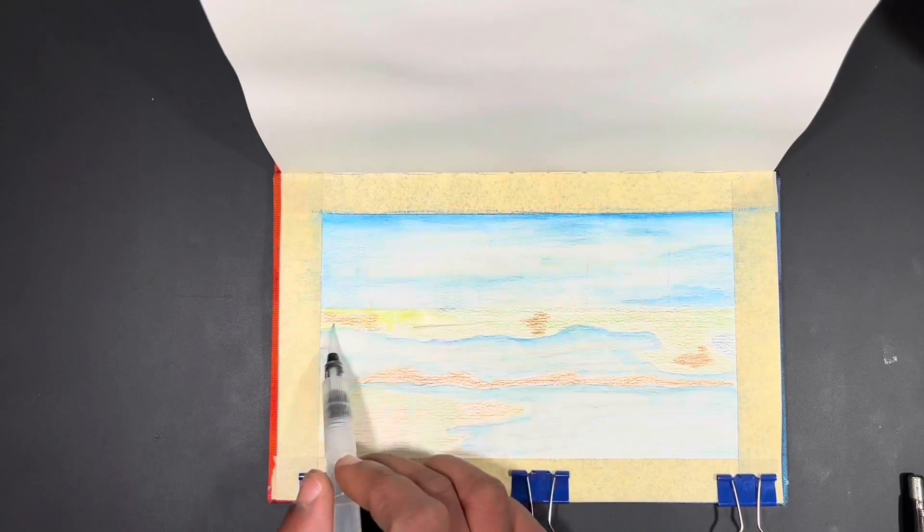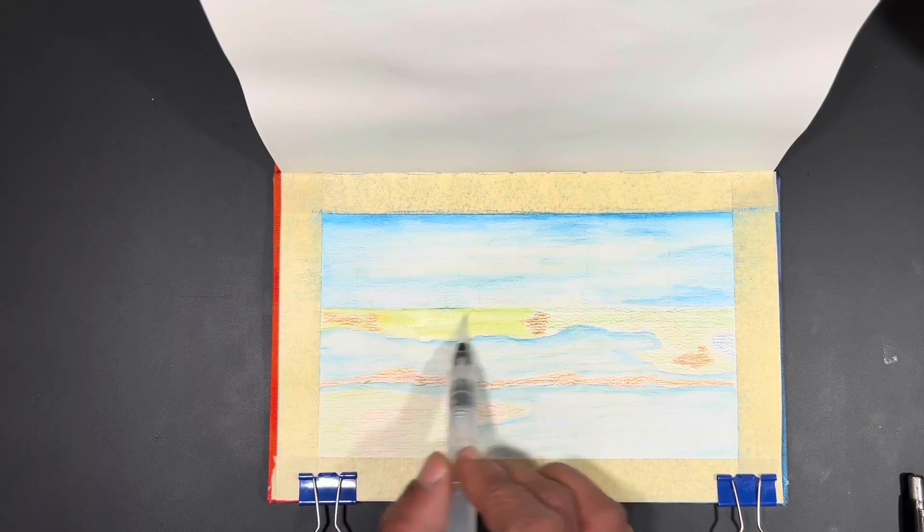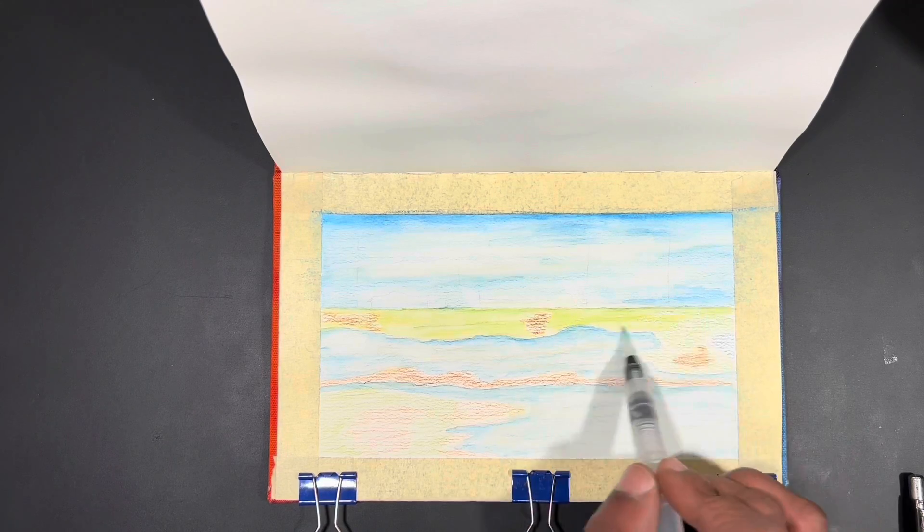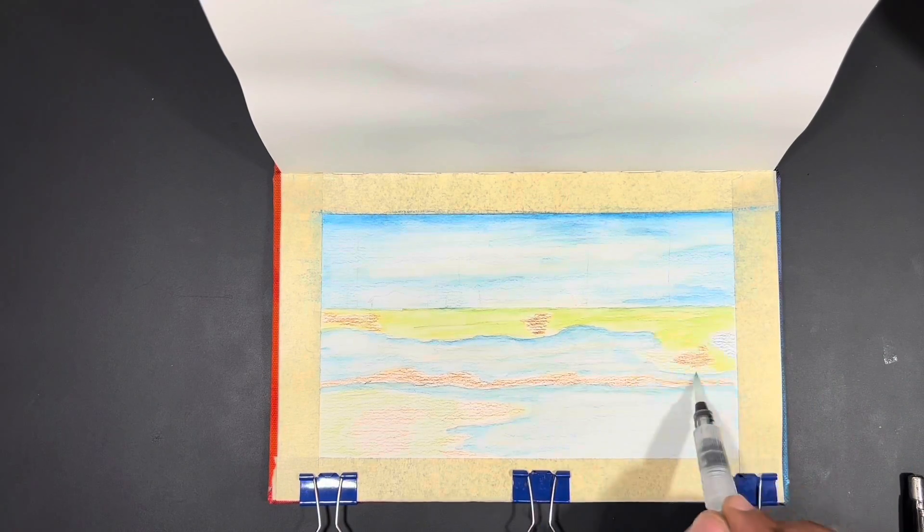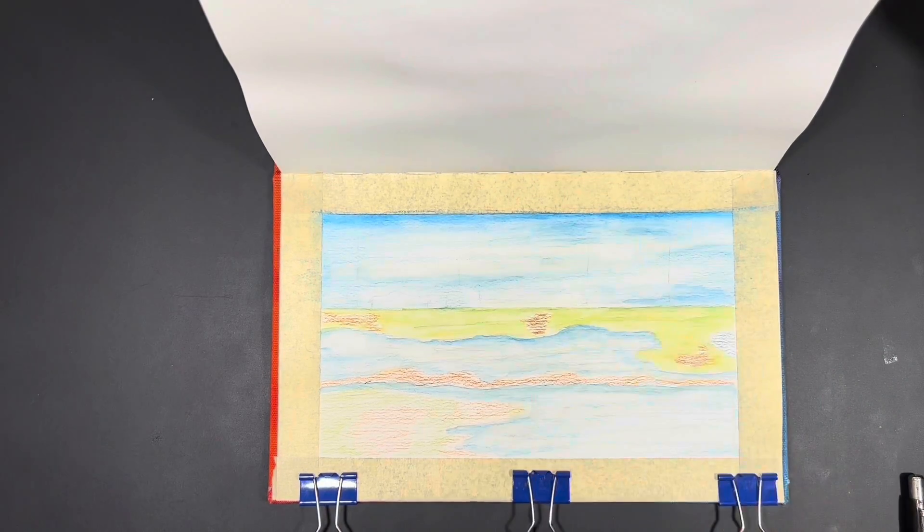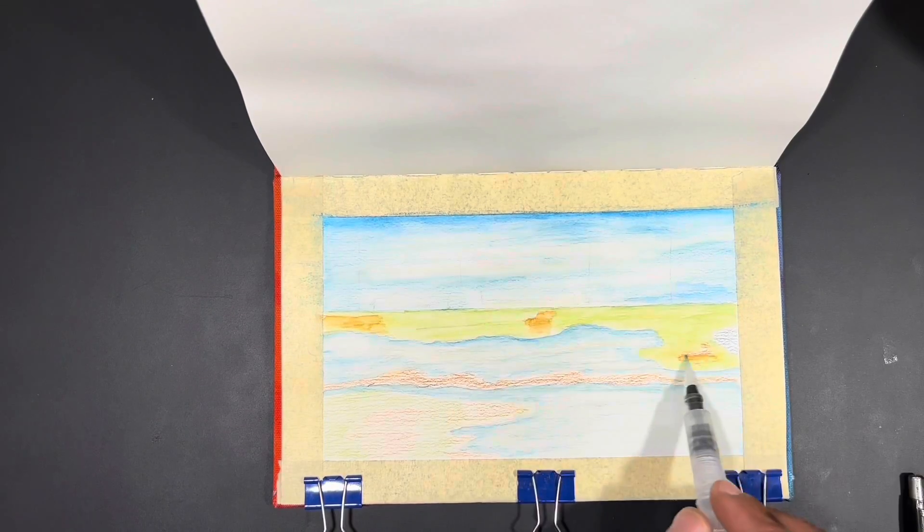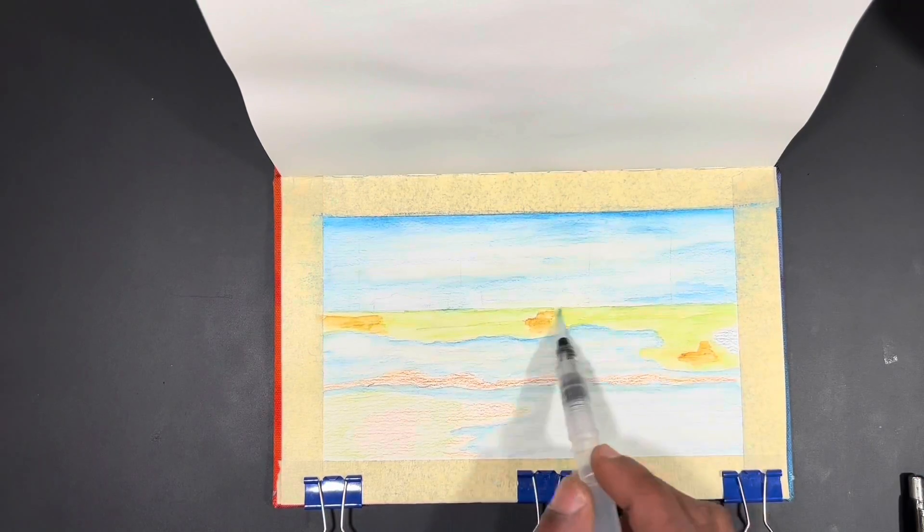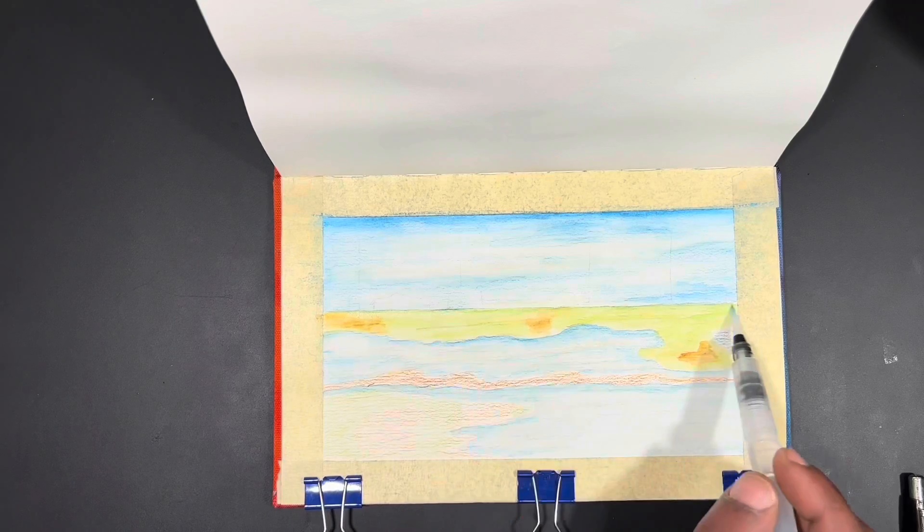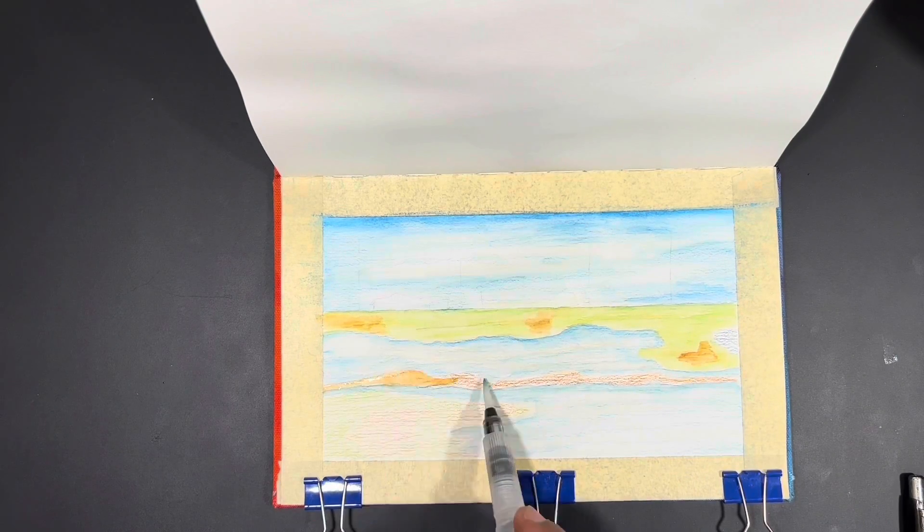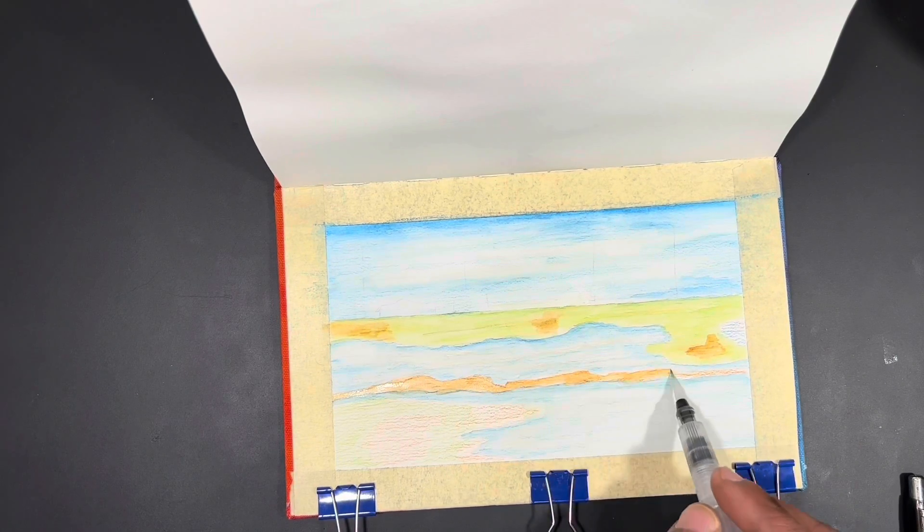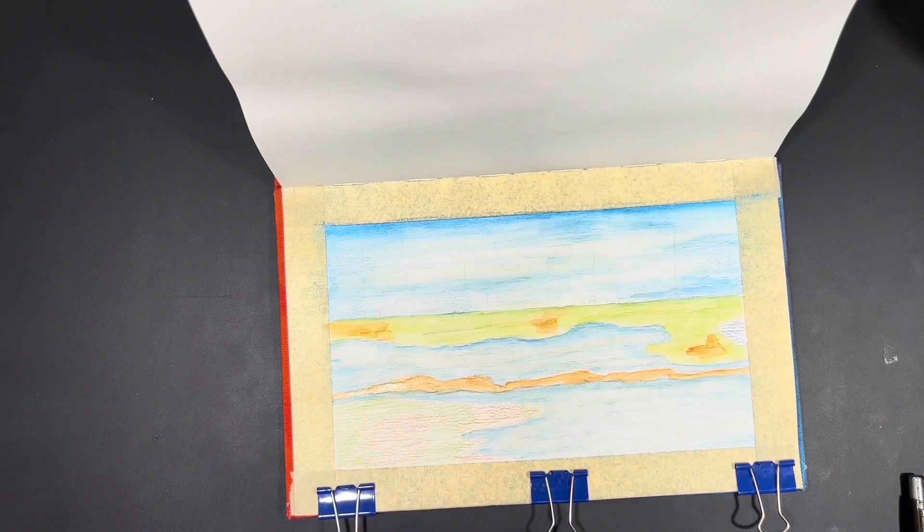So you saw that I used the water brush to disperse the pigment from the colors in the sky, in the water that I colored in. And those colors that I used, or the pencils, gave me sort of a cerulean blue and an ultramarine blue in the sky and in the different ponds of the water in the foreground.